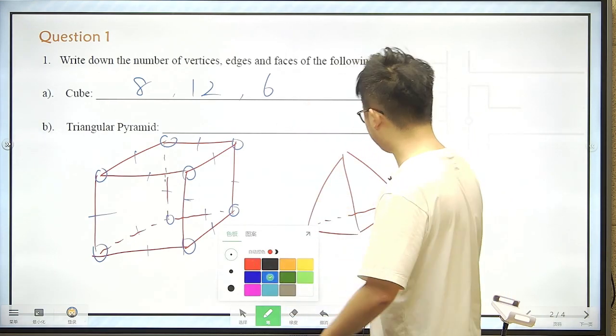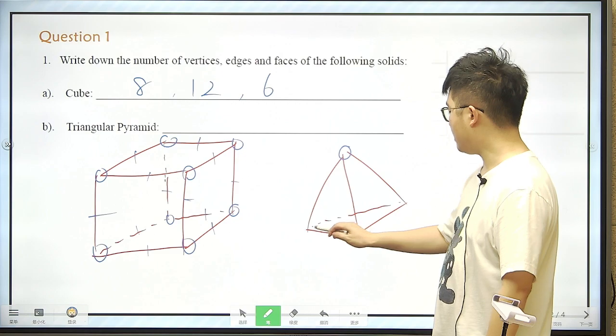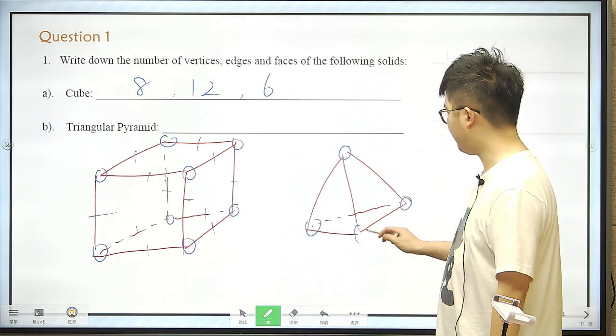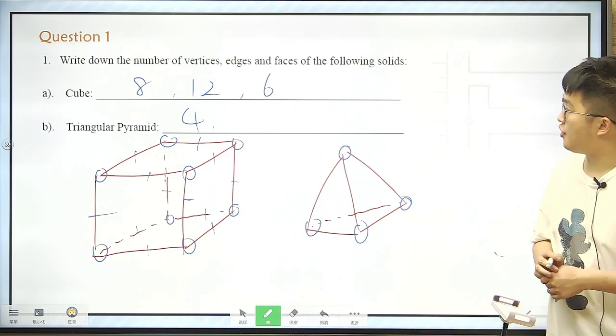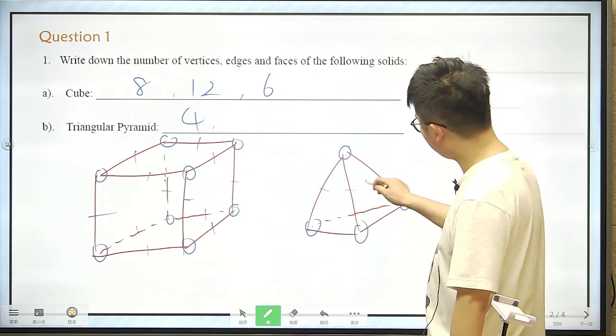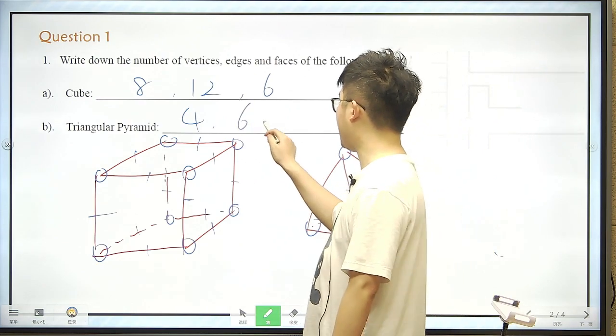So how many vertices? We count from the top to the bottom. 1, 2, 3, and 4. Only 4 vertices. So how many edges? 1, 2, 3, 4, 5, 6. 6 edges.